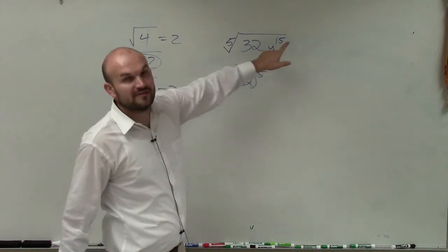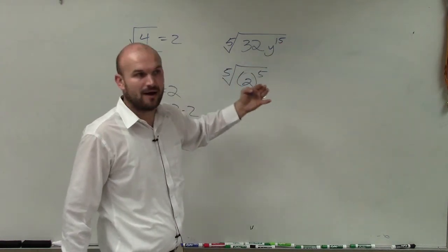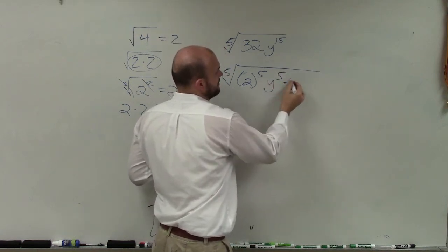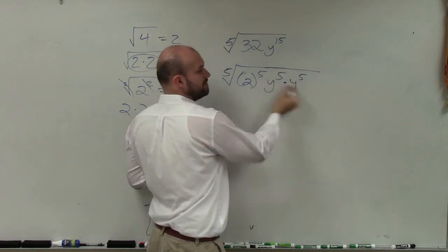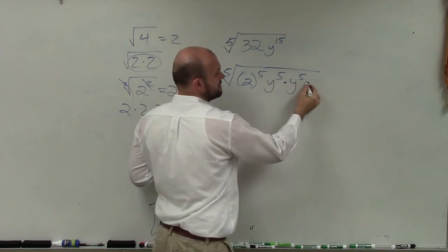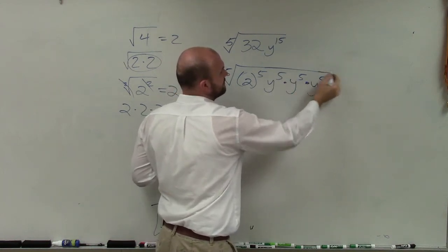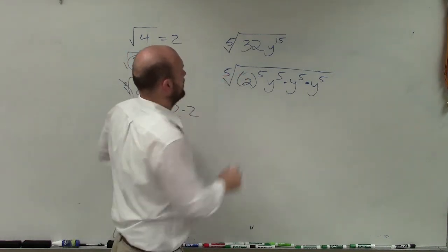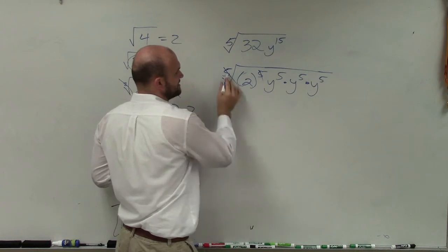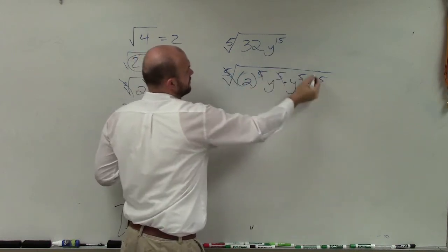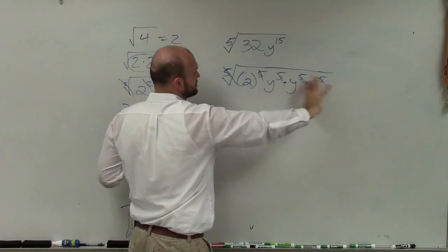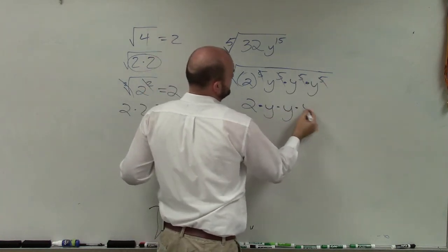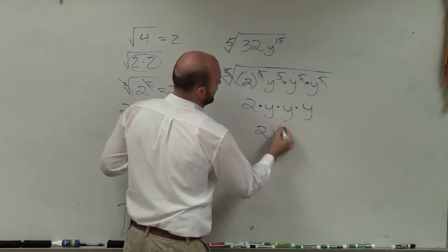Now let's look at y to the fifteenth. I want to write y to the fifteenth as y to the fifth power. How many times can we write y to the fifth? Well, y to the fifth times y to the fifth — adding exponents — becomes y to the tenth, times y to the fifth one more time is y to the fifteenth. So I can take the fifth root of two to the fifth, and the fifth root of y to the fifth three times.